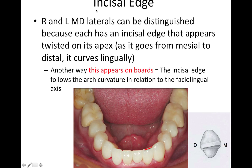We're going to take a look at the incisal edge. The right and left mandibular laterals can be distinguished from each other. You might occasionally get questions like this on the board where they'll ask you how can you tell the right tooth from a left tooth — like a hockey player comes in with the tooth in their hand. The right and the left lateral can be distinguished because each one has an incisal edge that appears twisted on its apex. It's not a straight line across — you can see how it's kind of twisted there on the distal. So as it goes from mesial to distal, it curves lingually.